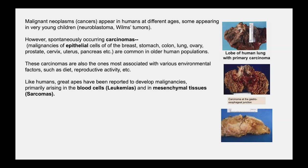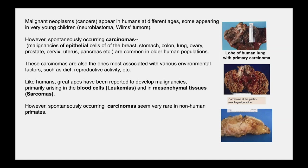These carcinomas are also most associated with various environmental factors such as diet and reproductive activity. Like humans, great apes have been reported to develop malignancies, but most of these arise in blood cells — leukemias and lymphomas — and in mesenchymal tissues called sarcomas. However, spontaneously occurring carcinomas seem very rare in non-human primates.